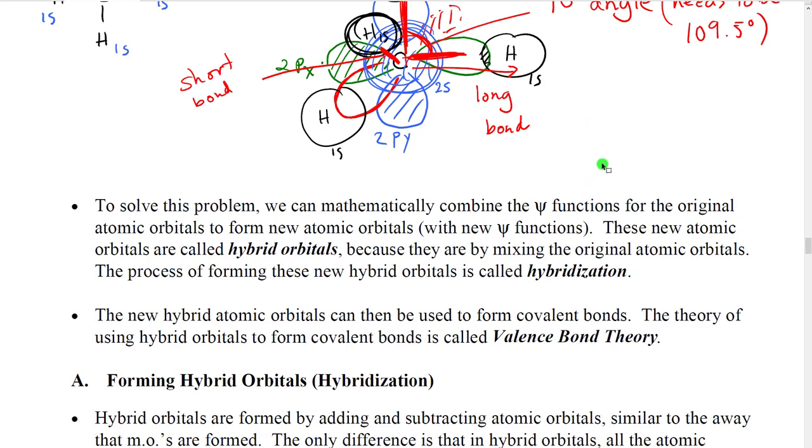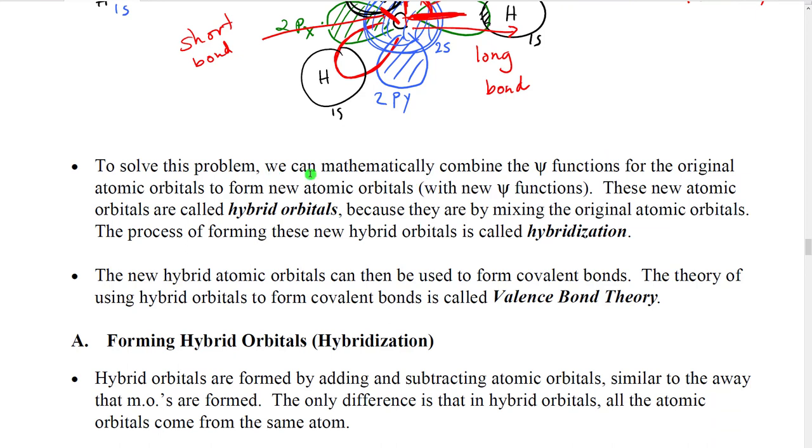Well, how are we going to do this? Well, what we're going to do is we're going to use math. So we already saw that we could take one function, we could add it to another function. So we start with two functions, we add them together, we get a completely new function. The new function has a different shape, it has a different energy. So what Linus Pauling said was, why don't we take our atomic orbital functions and combine them together on the same atom.